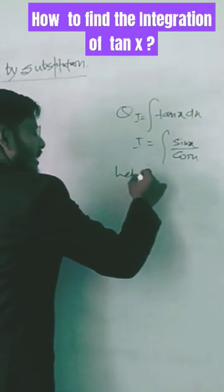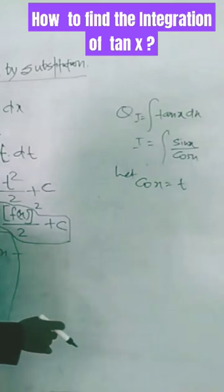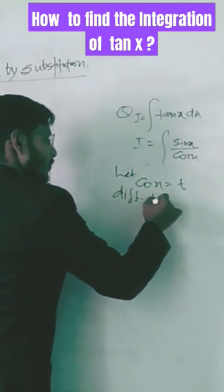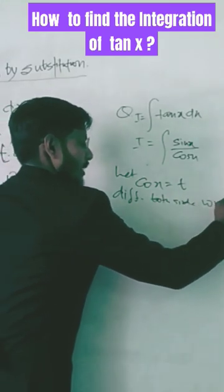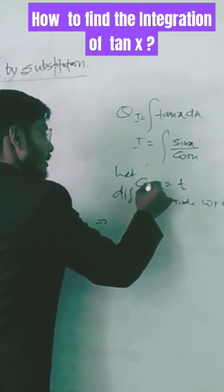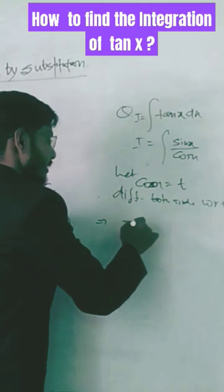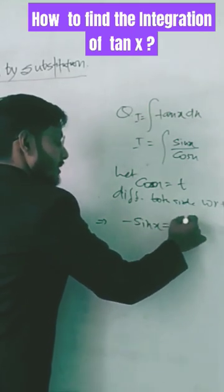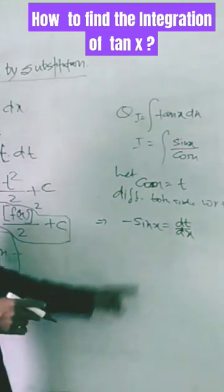Let's consider cos x equals t as I have done here. Now differentiating both sides with respect to x, the differentiation of cos x is minus sin x and the differentiation of t is dt upon dx.